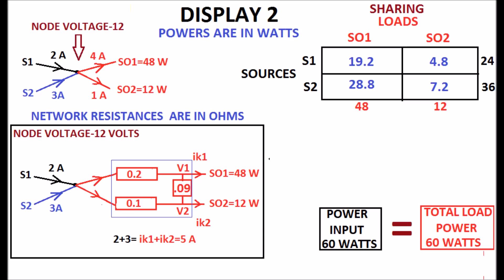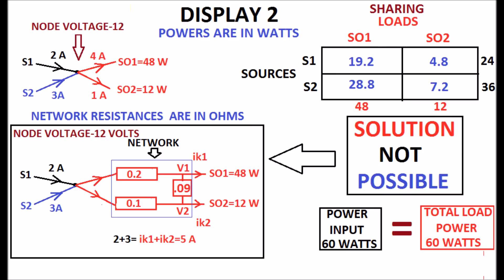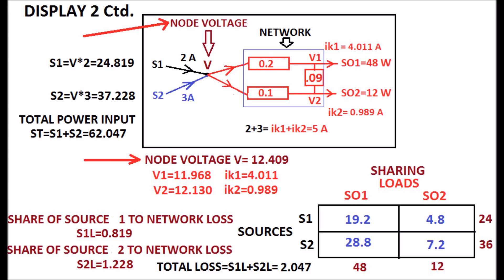When the loads are fed through a network from the same 12V node at which the two sources are connected, the solution is not possible. If the node voltage is calculated for a feasible solution is displayed, the result is also given.